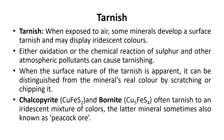Tarnish occurs when minerals exposed to air develop a surface tarnish and may display iridescent colors. This is mainly due to either oxidation or chemical reaction with sulfur and other atmospheric pollutants. The tarnish can be clearly distinguished from the mineral's real color by scratching or chipping it. Examples include chalcopyrite (CuFeS₂) and bornite (Cu₅FeS₄), which often tarnish to an iridescent mixture of colors. Bornite is also known as peacock ore.